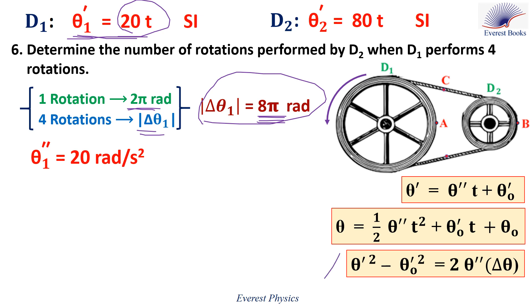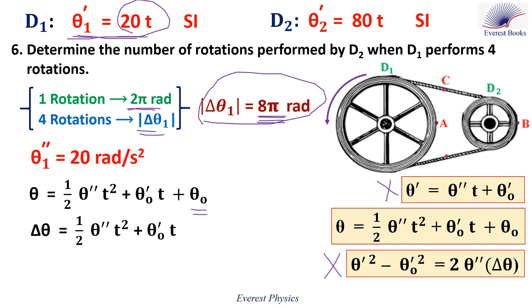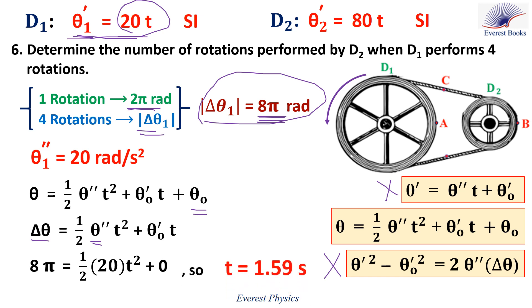Because we want to calculate the time, we cannot use the first equation. And because the angular velocity at time T is not given, we cannot use the third equation. Then we use the second equation. Taking theta 0 to the left side gives delta theta equals one half theta_W prime T squared plus theta 0 prime T. Replacing delta theta by 8 pi radians and theta_W prime by 20 radians per second squared, therefore T equals 1.59 seconds. This is the time needed by wheel D1 to perform 4 rotations.